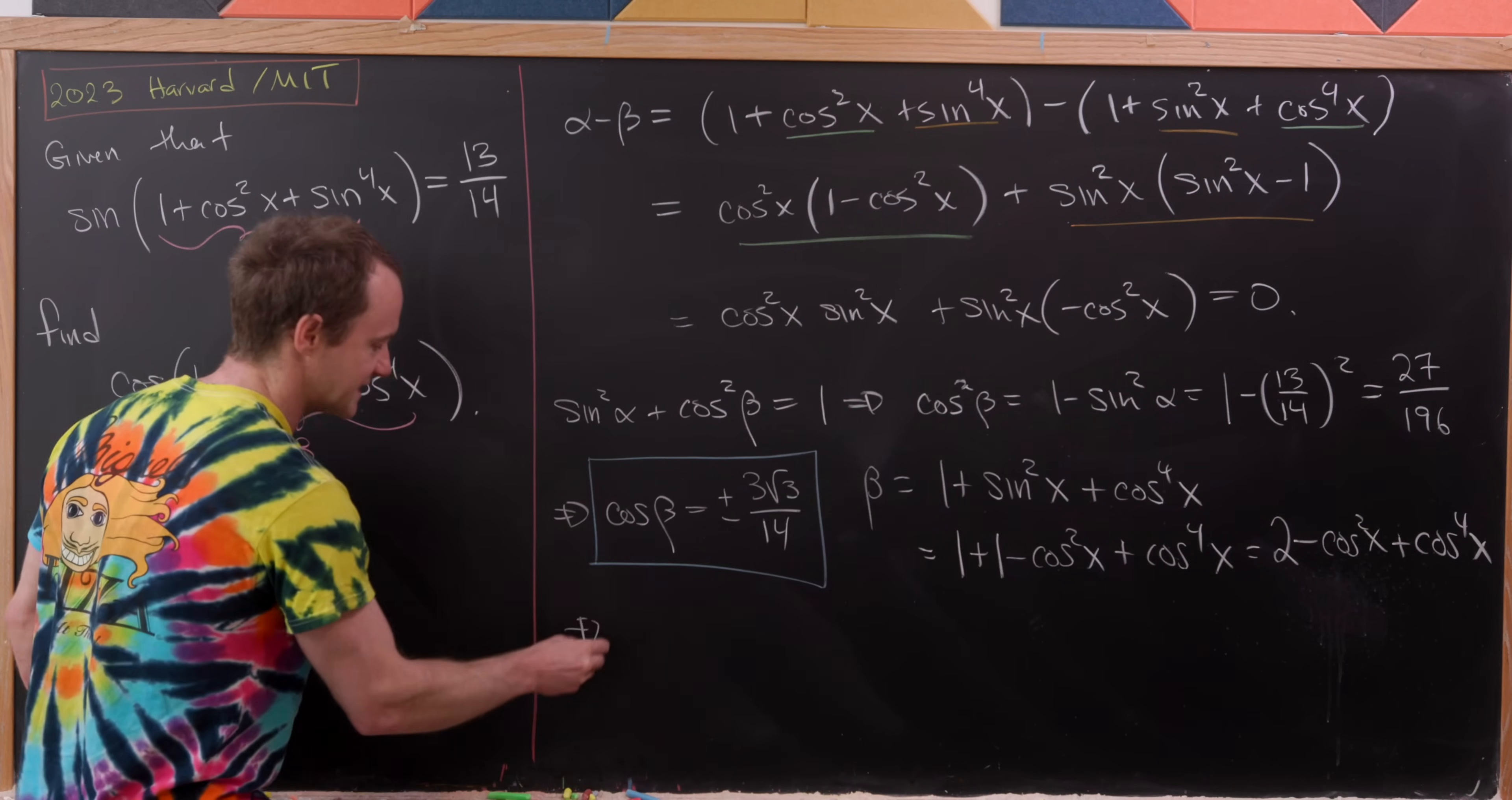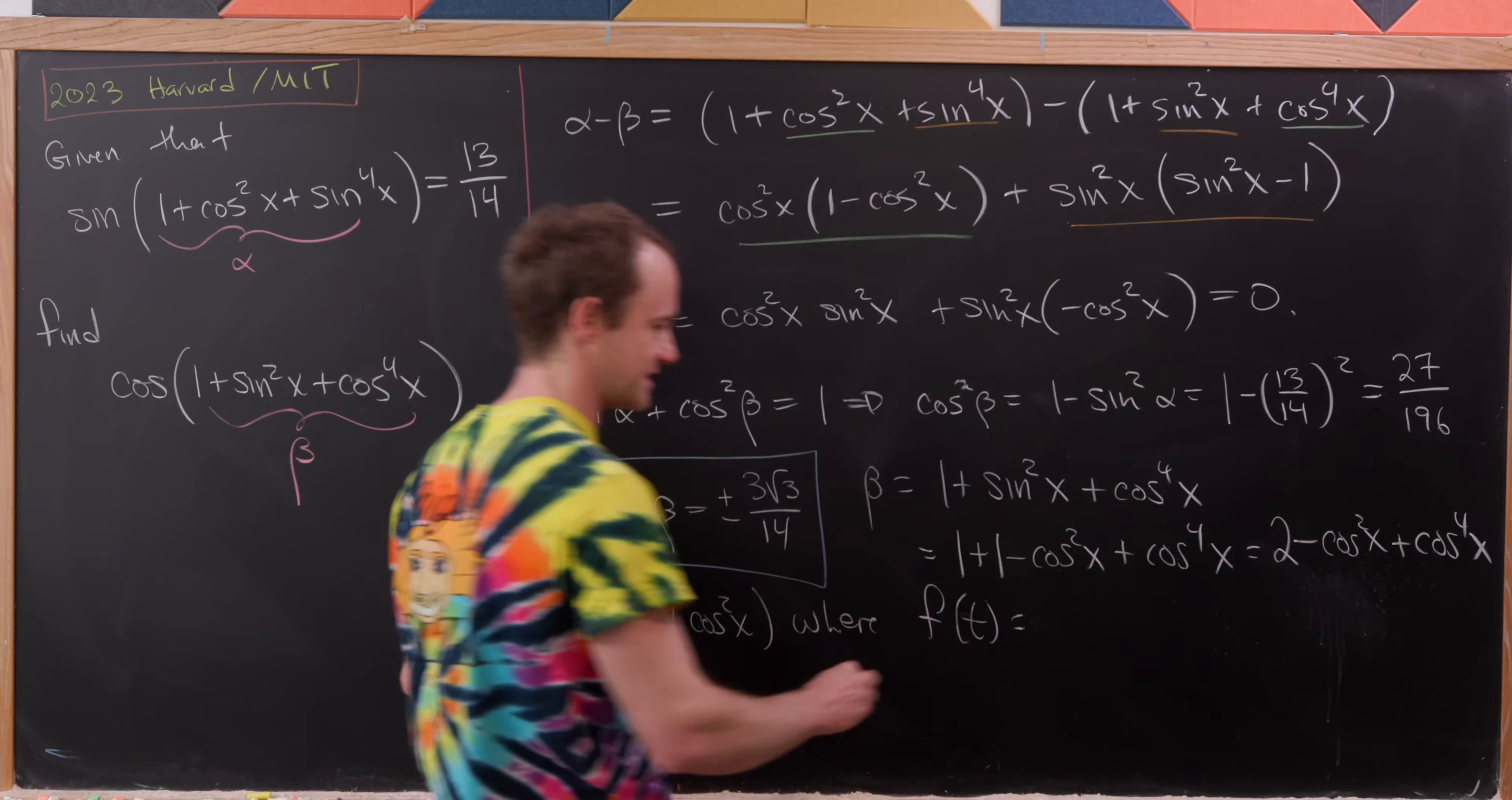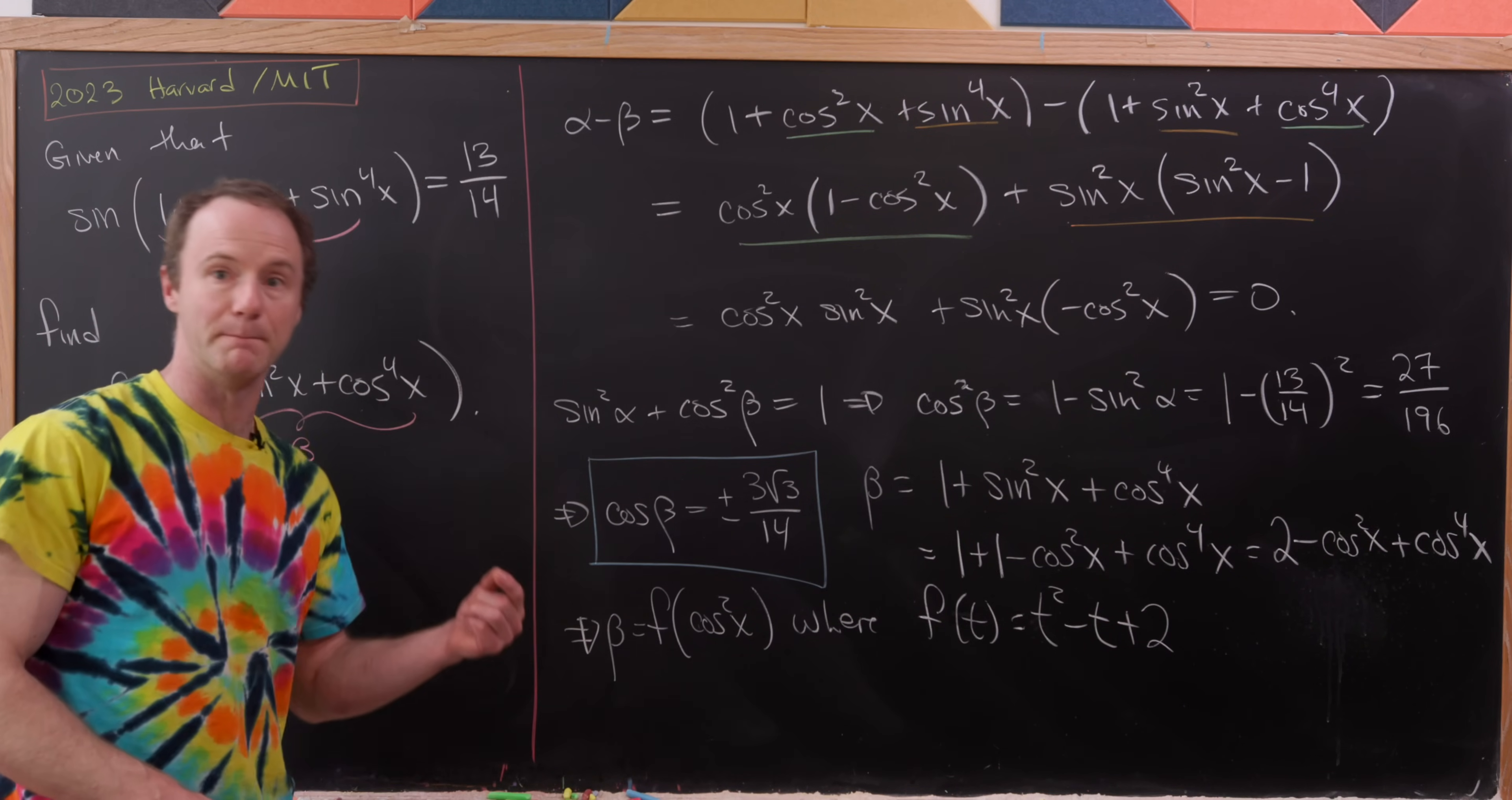Now we can put this together as saying that β = f(cos²x) where f is the following quadratic polynomial: f(t) = t² - t + 2. So notice we're sticking cos²x in there—that's how we get like cos⁴x and stuff.